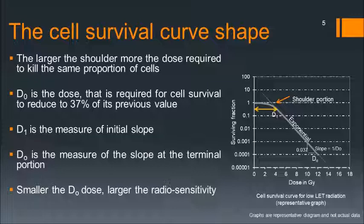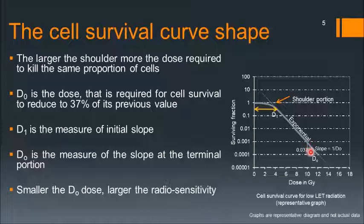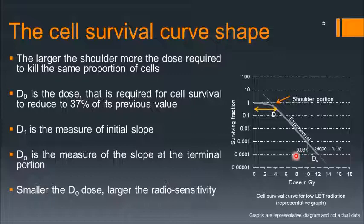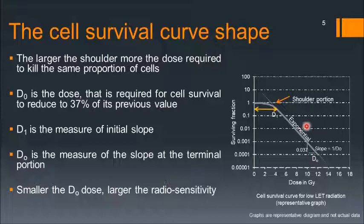The larger the shoulder, the more dose is required to kill the same proportion of cells. D0 is the dose required for cell survival to reduce to 37% of its previous value. D1 is a measure of the initial slope, and D0 is a measure of the slope at the terminal portion. Smaller the D0 dose, larger the radiosensitivity — meaning if D0 is smaller, the curve would be much steeper and more radiosensitive.